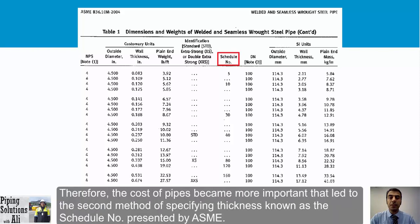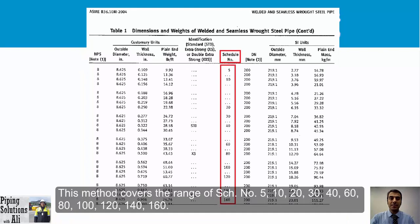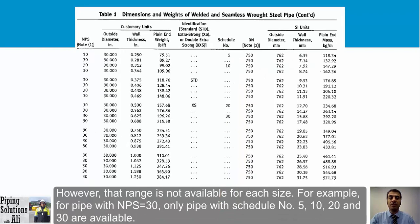With the development of the oil industry in the United States, pipes changed to carbon steel due to its properties, making pipe cost more important. This led to the second method for specifying thickness: the schedule number, presented by ASME. This method covers schedule numbers 5, 10, 20, 30, 40, 60, 80, 100, 120, 140, and 160.